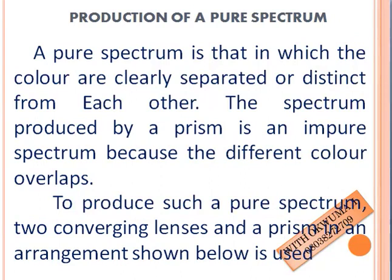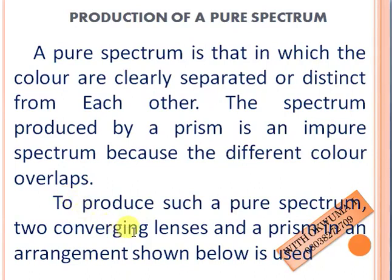Now we look at the production of a pure spectrum. A pure spectrum is one in which the colors are clearly separated or distinct from each other. When you talk about a pure spectrum, those colors will be clearly separated with no overlapping. The spectrum produced by a prism alone is an impure spectrum because the different colors overlap. To produce a pure spectrum, we need two converging lenses and a prism in a specific arrangement.